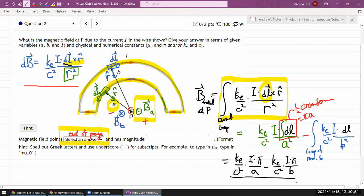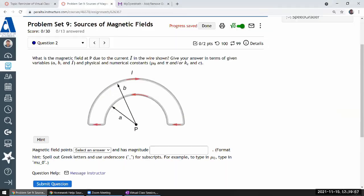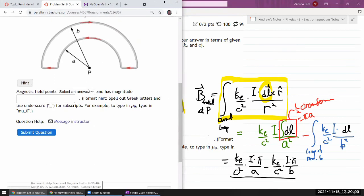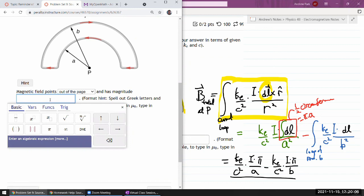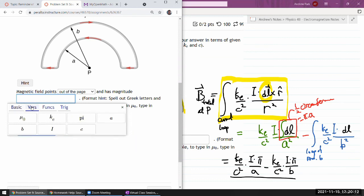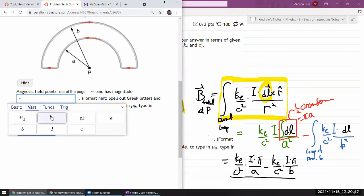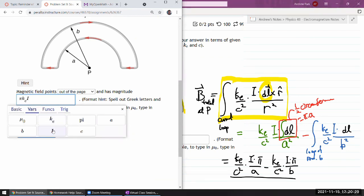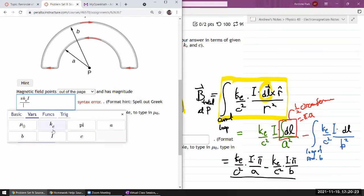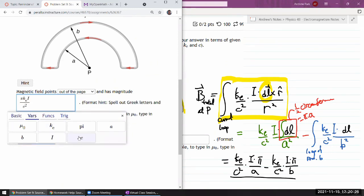So this is it. I can simplify it a little bit. I can factor some things. In fact, let me plug this into the question and just factor it in situ. So magnetic field point out of page. And here I would just say I'm going to factor out pi ke times I over C squared. So pi times ke times I divided by C squared. And then after factoring those out, I have one over A minus one over B. So that's it.